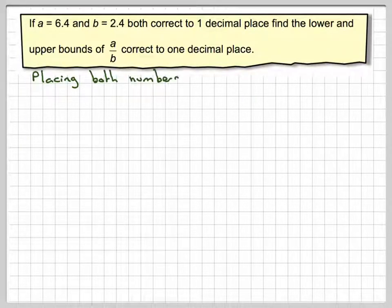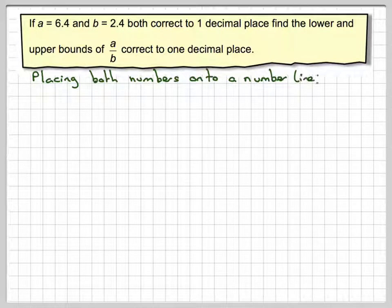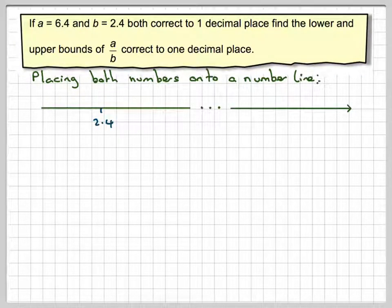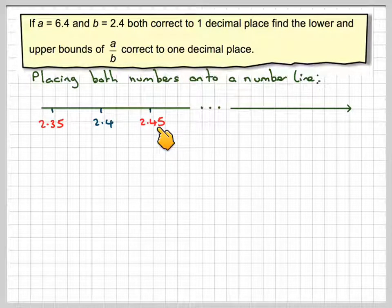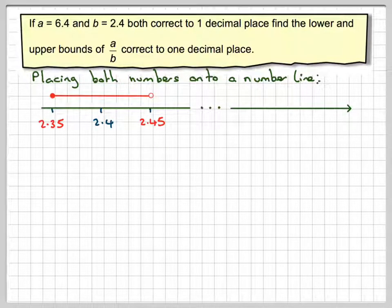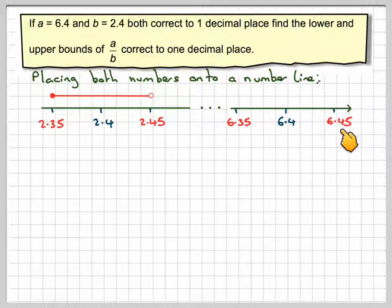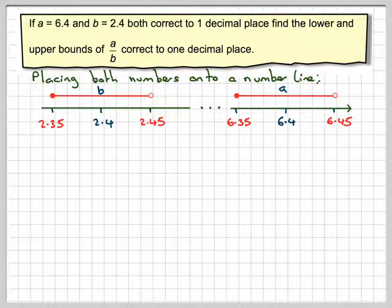So, placing both numbers onto a number line, this approach seems to work quite well. We've got 2.4, correct to one decimal place, so it comes from 2.35 to 2.45. And then 6.4 is going to be from 6.35 to 6.45. So this one's A and this is B.